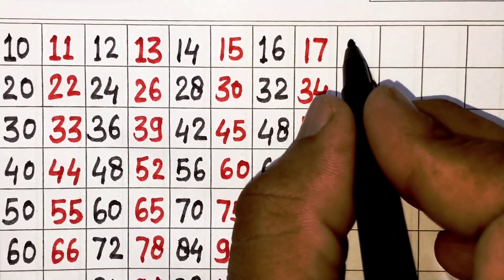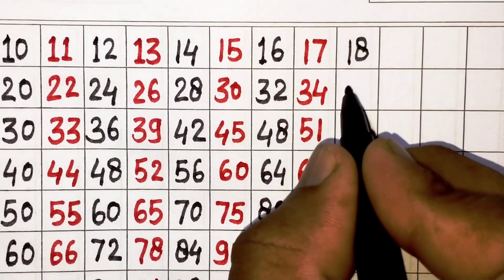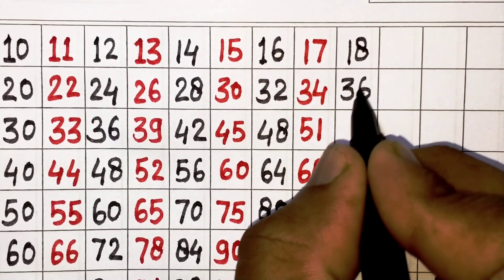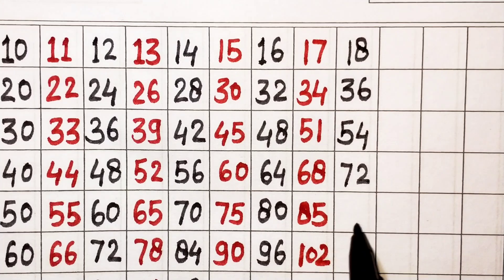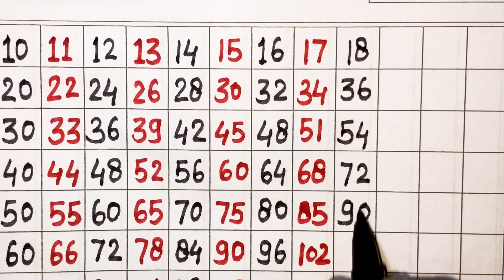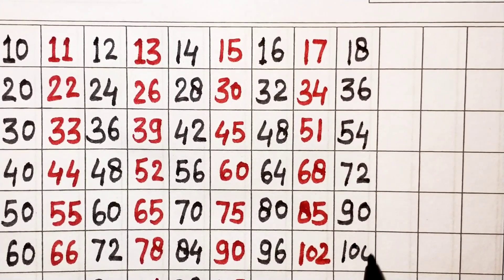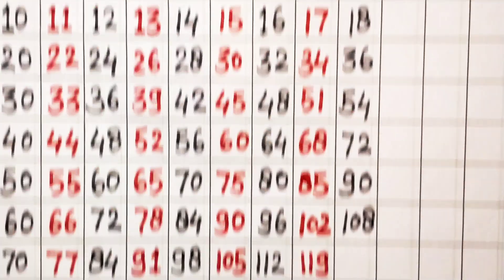Next, 18. 18 ones are 18, 18 twos are 36, 18 threes are 54, 18 fours are 72, 18 fives are 90, 18 sixes are 108, 18 sevens are 126.